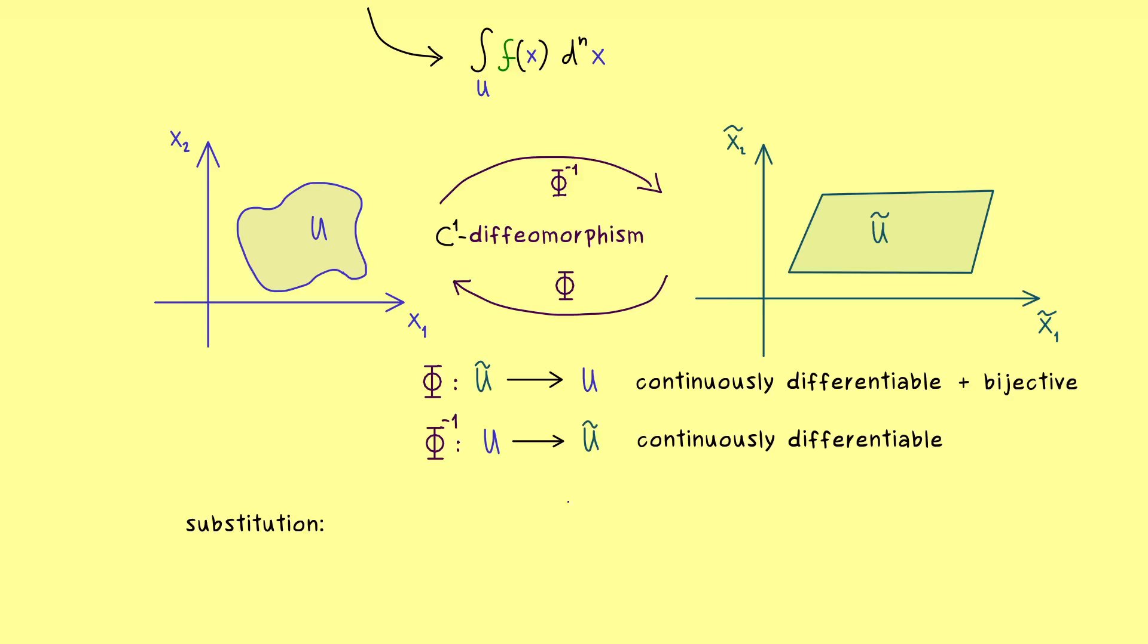Okay, and now here what you should see is that we want to use this function phi as a substitution in our integral, which means instead of x we want to write phi of x tilde. This is the whole idea. This is the change of variables we want to do.